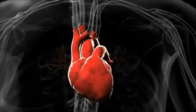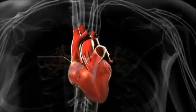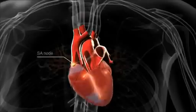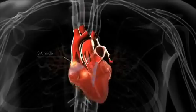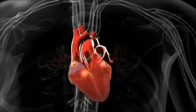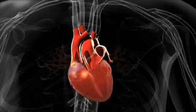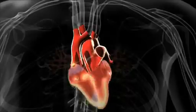In atrial fibrillation, electrical impulses do not originate in the sinoatrial or SA node, but from a different part of the atrium or in the nearby pulmonary veins. These abnormal electrical signals become rapid and disorganized, radiating through the atrium and atrial walls in an uncoordinated manner.